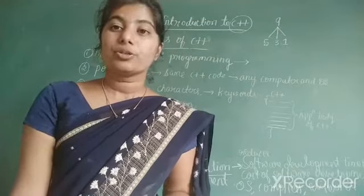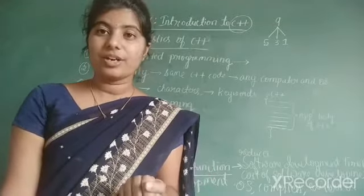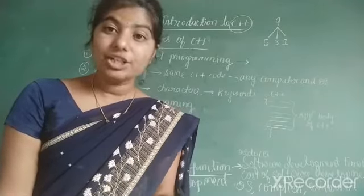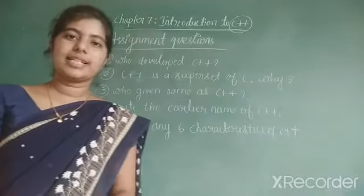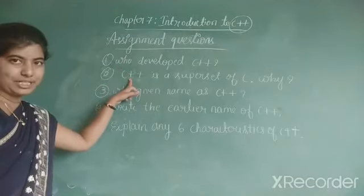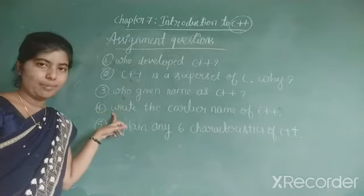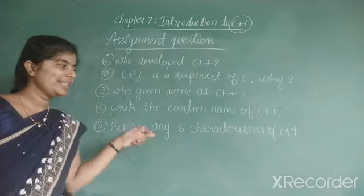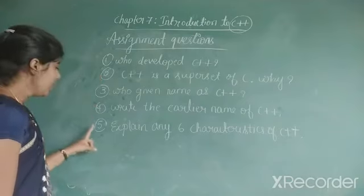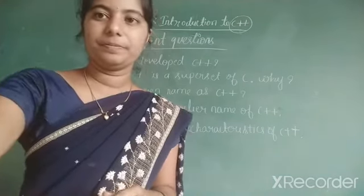This concludes today's session on the introduction and characteristics of C++. The assignment questions are: Who developed C++? Why is C++ called a superset of C? Who gave the name C++? What is the earlier name of C++? And explain any 6 characteristics of C++. These first four are 1-mark questions and the fifth is a 5-mark question. Thank you all, start writing the assignment and send it to your mentor groups.